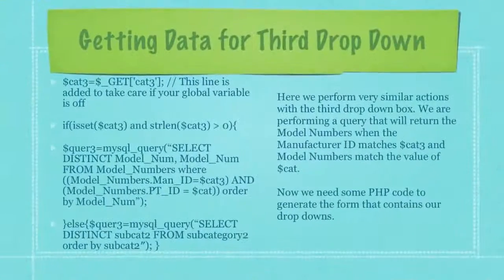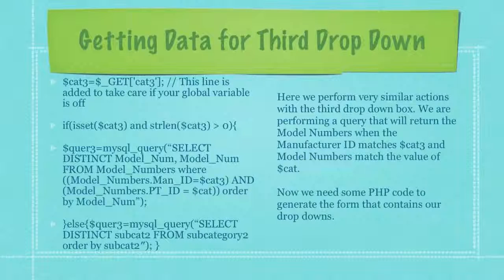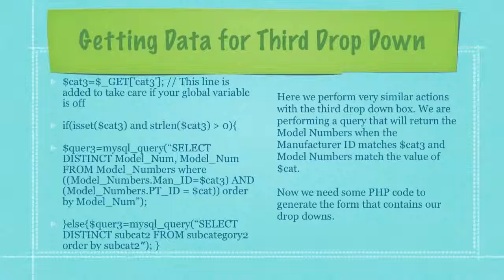Here we perform very similar actions with the third drop-down box. We're performing a query that will return the model numbers when the manufacturer ID matches whatever value is in the variable named cat3 and the model numbers match the value of the variable named cat.